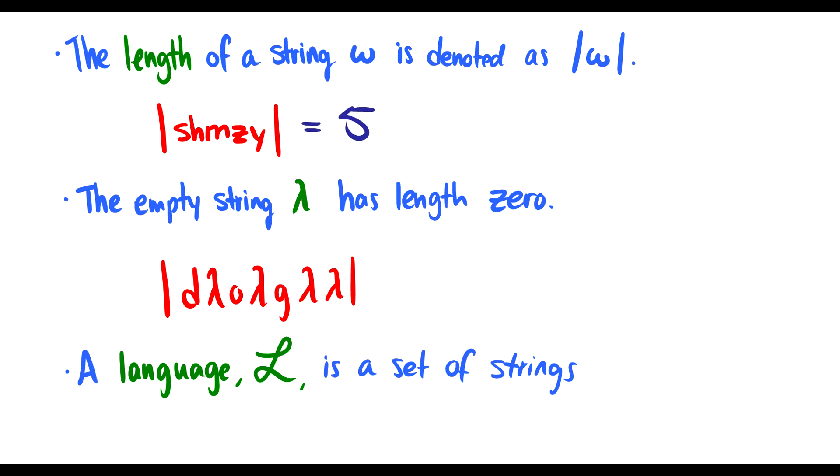We also have the empty string lambda, which some textbooks also use epsilon. This is the empty string. It has no length. It can be technically processed at any time. If we're reading symbol by symbol, the empty string does not have a place. If I take the string D lambda O lambda G lambda lambda, all of these lambdas have zero length, so it's really just a length of three.